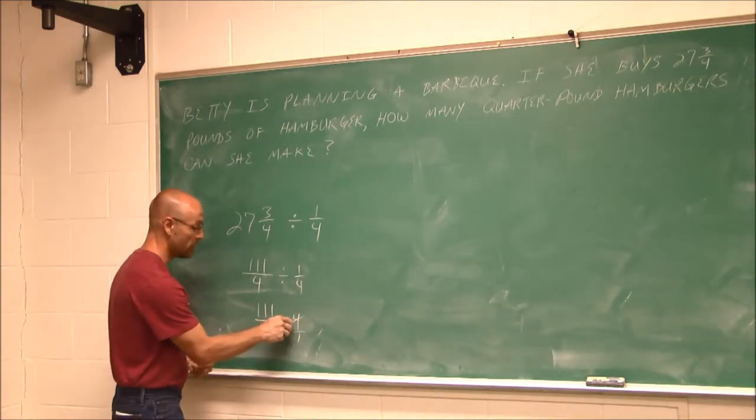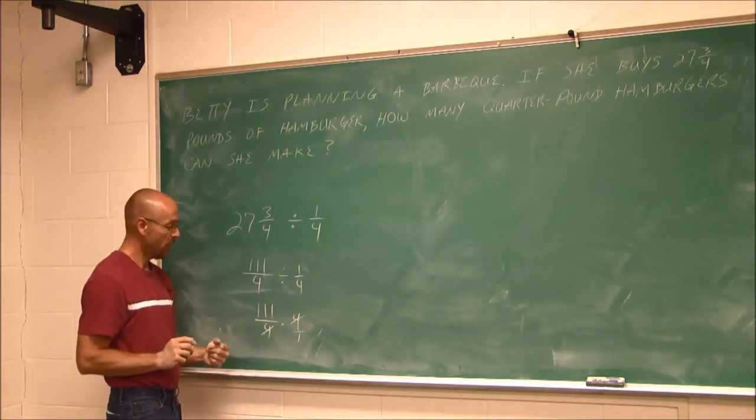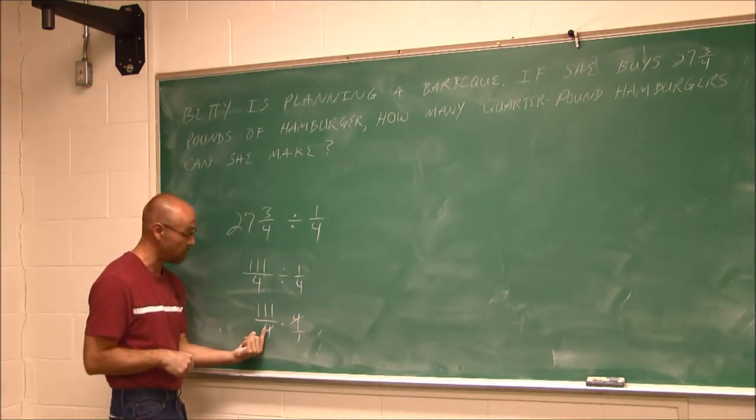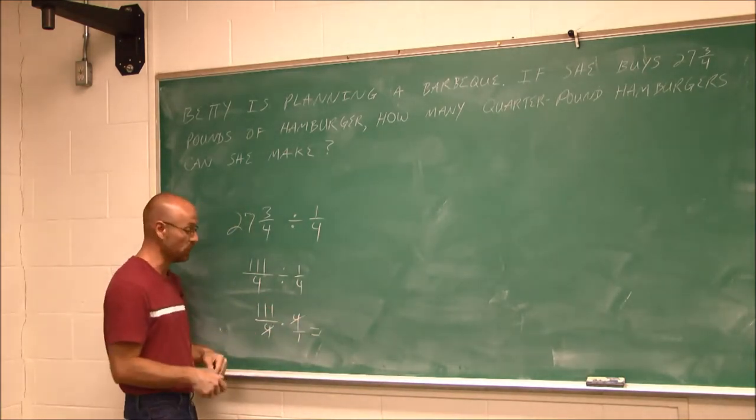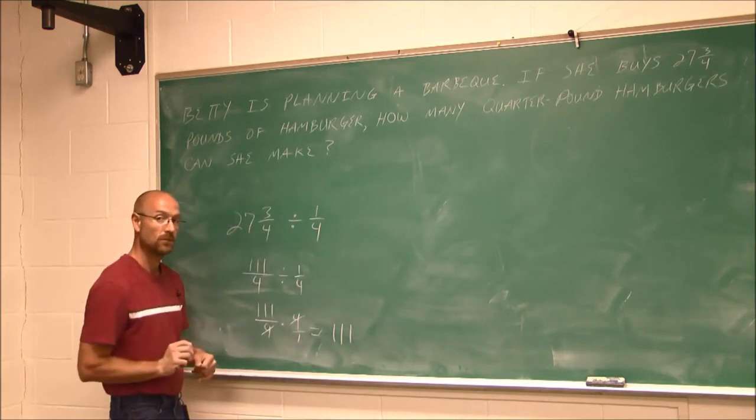This 4 on top will reduce the 4 on the bottom. And now I have 111 times 1, which is just 111, divided by 1 times 1. Well, that's nice that everything kind of reduced. And I get 111.